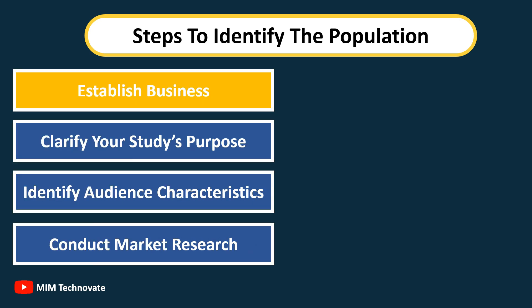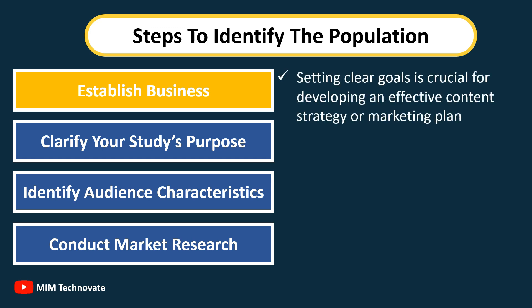Step one: Establish business or brand objectives. Setting clear goals is important for developing an effective content strategy or marketing plan.